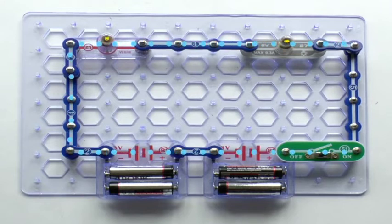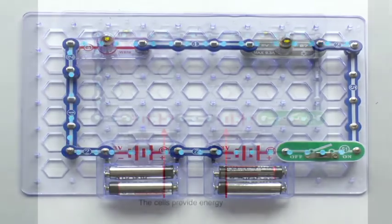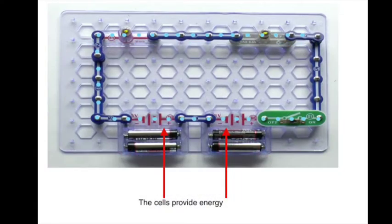In a series circuit like this, the same current flows all the way around the circuit. The cells are delivering energy to the electron flow. The bulbs convert that energy to heat and light.